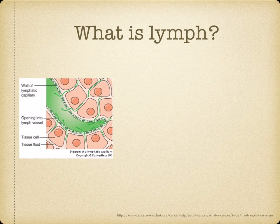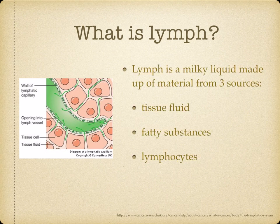Let's move on to lymph. What is lymph? Lymph is a milky liquid made up of material from three sources: tissue fluid that has not been reabsorbed at the venous end of the capillary network, fatty substances which have been absorbed in the ileum, and lymphocytes which are stored in lymph nodes.